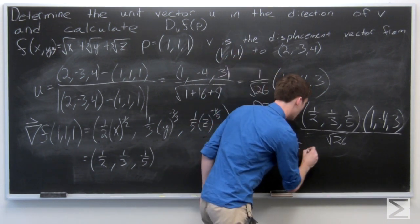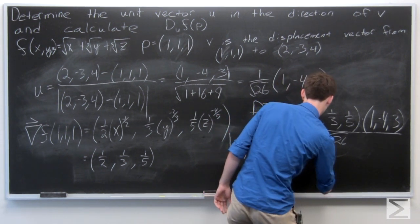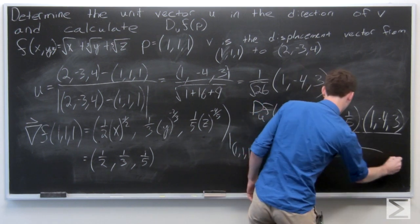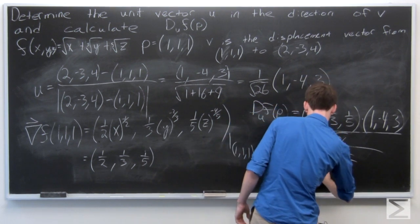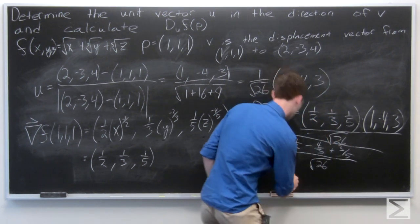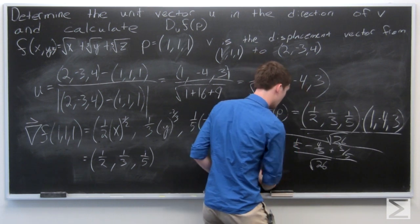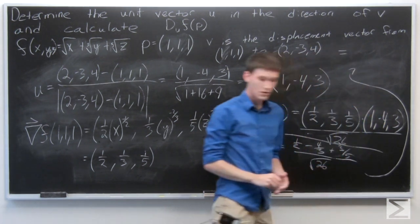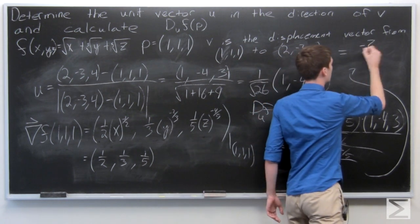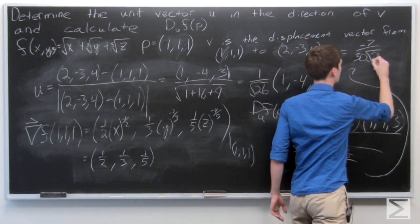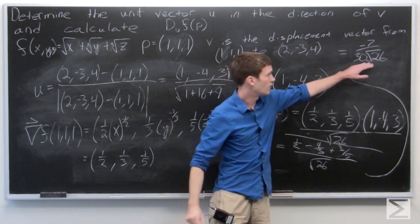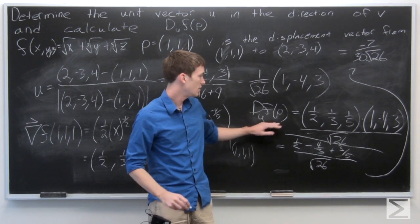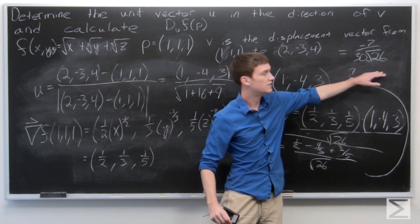So we get... and that's going to equal negative 7 over 30 times the square root of 26. So the directional derivative of f at p in the direction of u is equal to negative 7 over 30 square roots of 26.